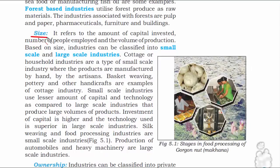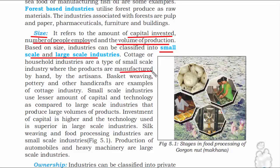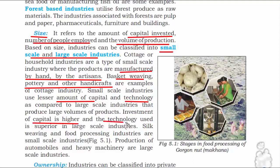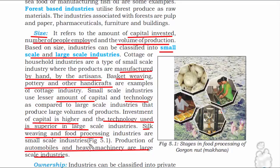The second factor is size. When we say size, we mean how much money is invested in that particular industry, how many people are employed there, and what is the volume of production — that is, the output. Based on size, industries are classified into small-scale and large-scale. Small-scale industries are ones where people manufacture things by hand — examples are basket weaving, pottery, and other handicrafts. Here, the capital is comparatively less and technology is not advanced. Large-scale industries are exactly opposite — the capital is huge and technology is advanced. Examples include production of automobiles and heavy machinery.